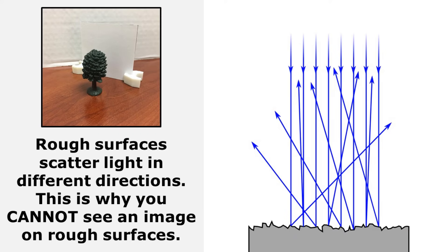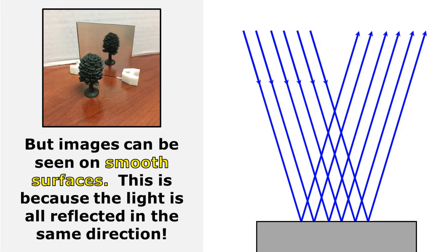Rough surfaces scatter light in different directions. This is why you cannot see an image on rough surfaces. But images can be seen on smooth surfaces, because the light is all reflected in the same direction.